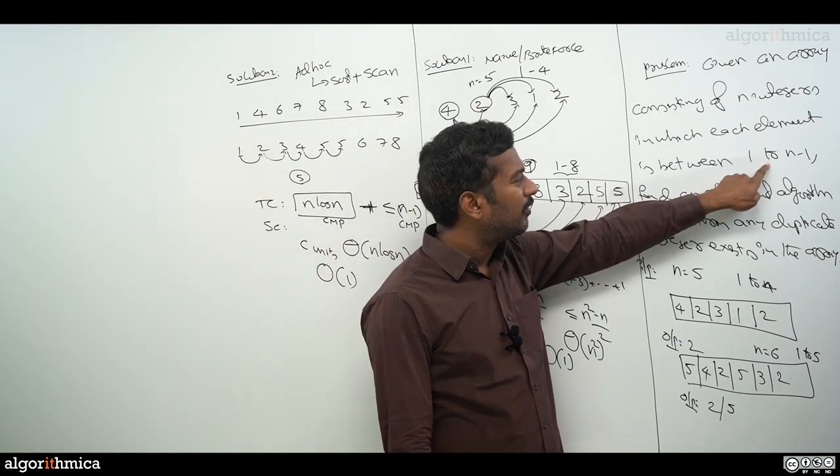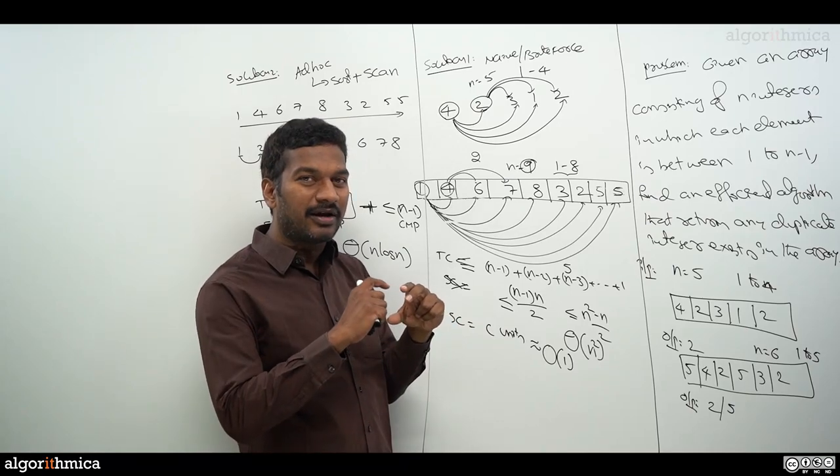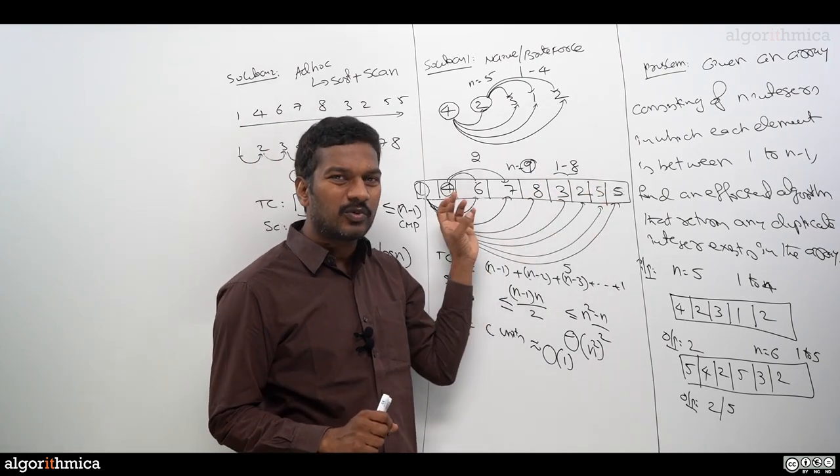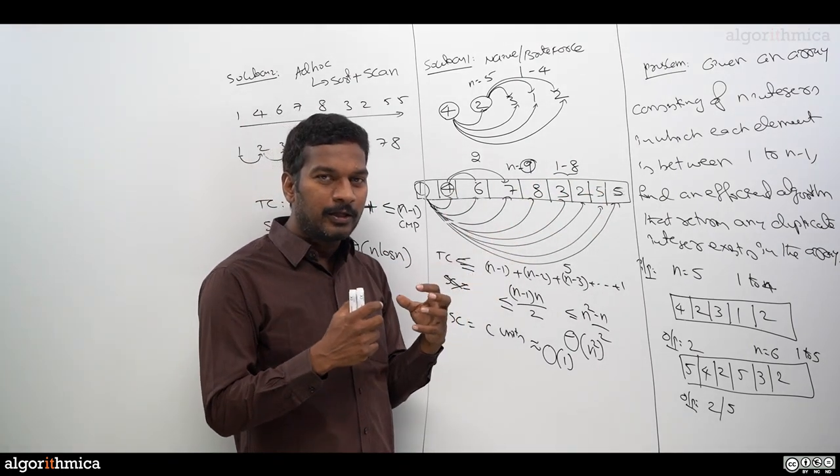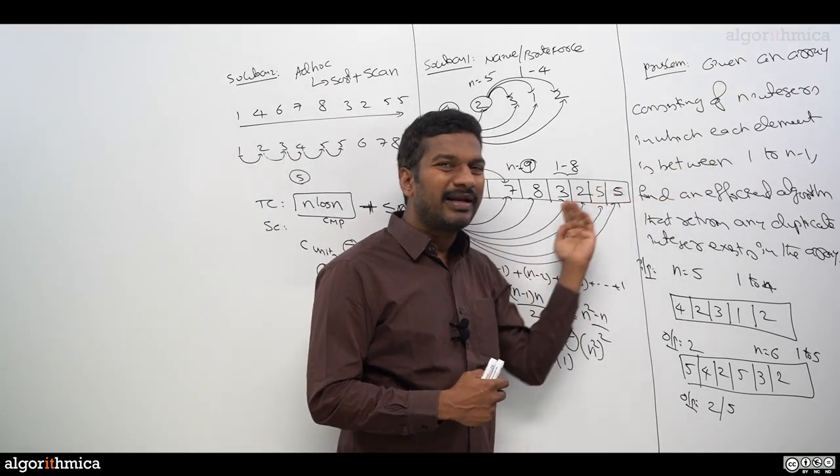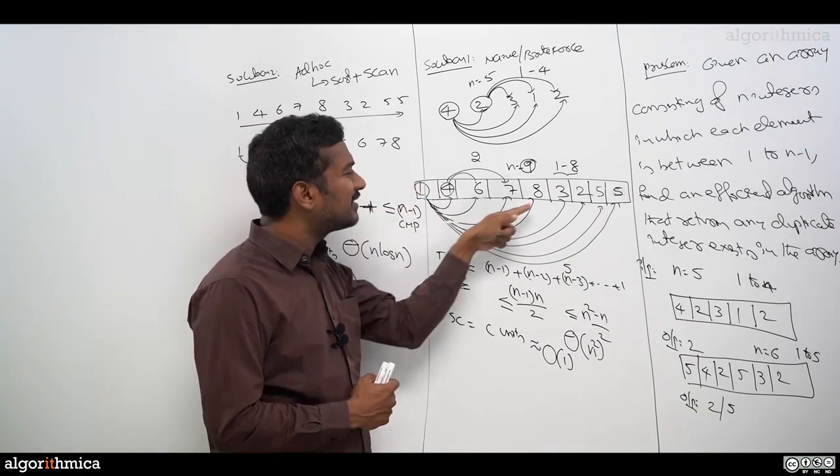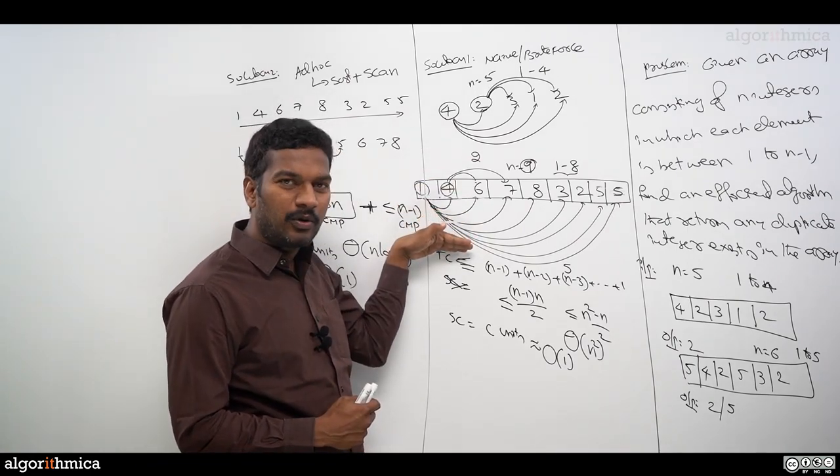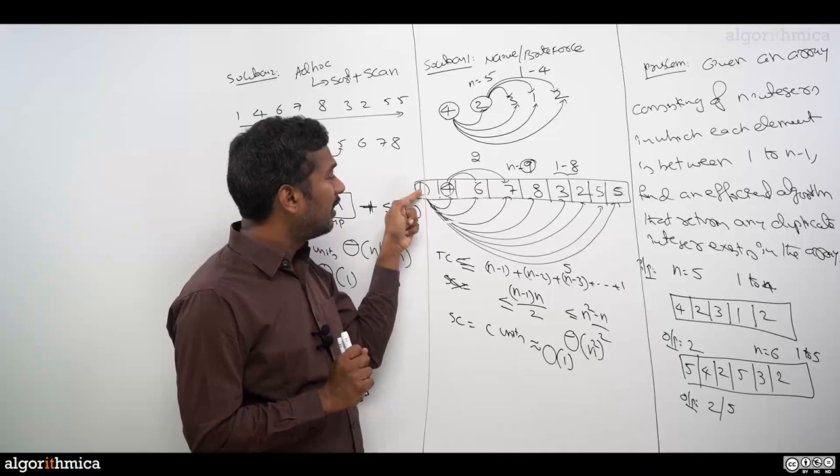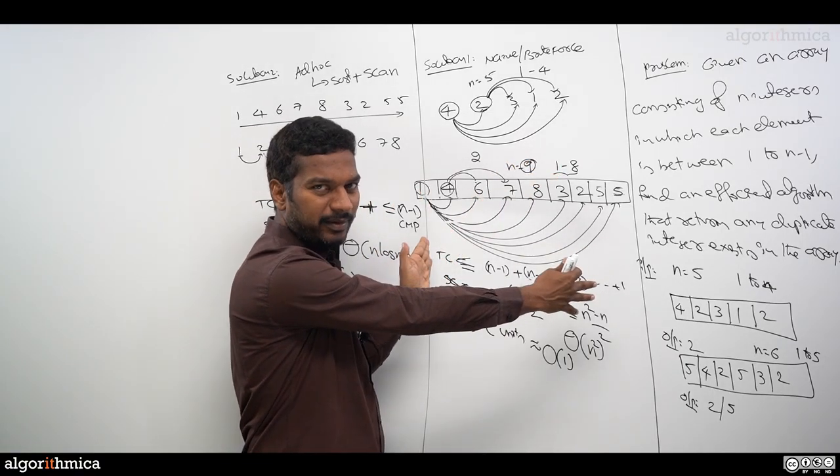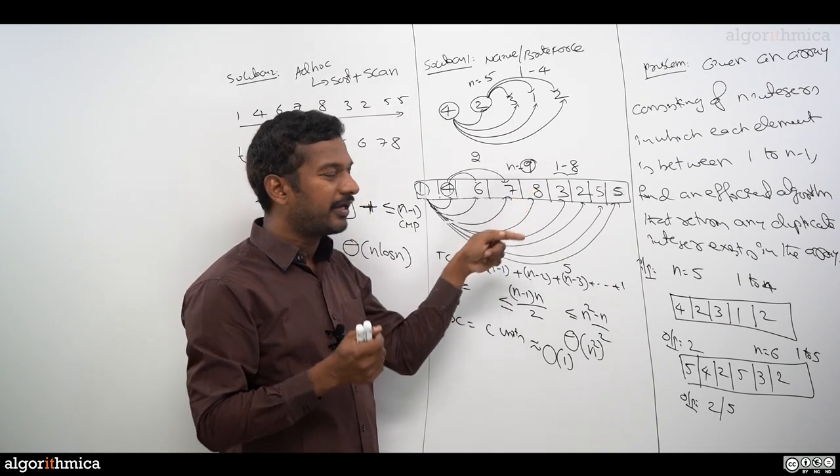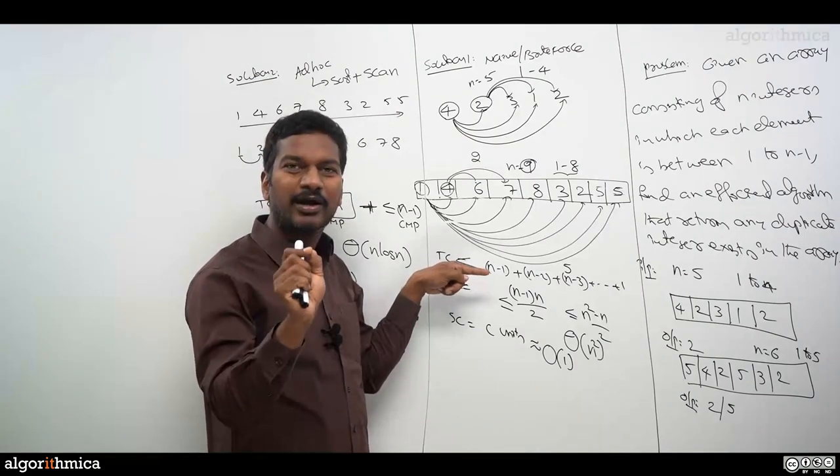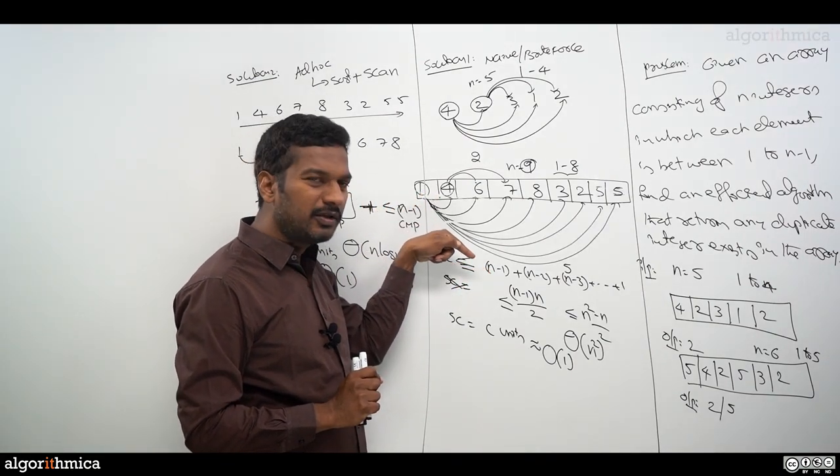If you see the problem statement, we don't need to bother about the element range because they're giving clearly one to n minus one. Since range is one to n minus one, can I use that hint to truly come up with a single scan algorithm? Since one to n minus one is the only possibility, instead of doing a scan, can I compromise some space? If I take some kind of auxiliary memory, since range is one to n minus one, that much space I can afford. Instead of scanning and finding duplicate, can I go directly into the array and look up? Array lookup is super fast, it's order of one complexity.